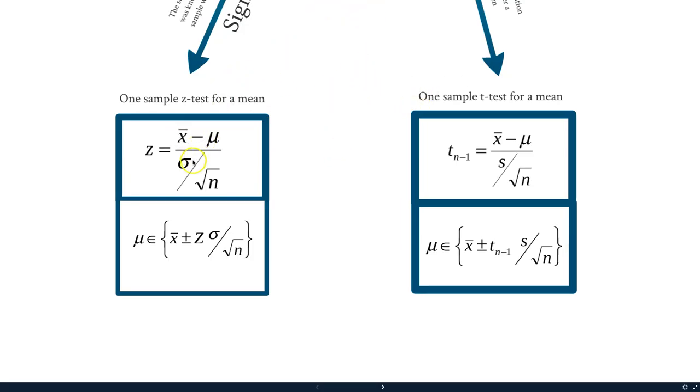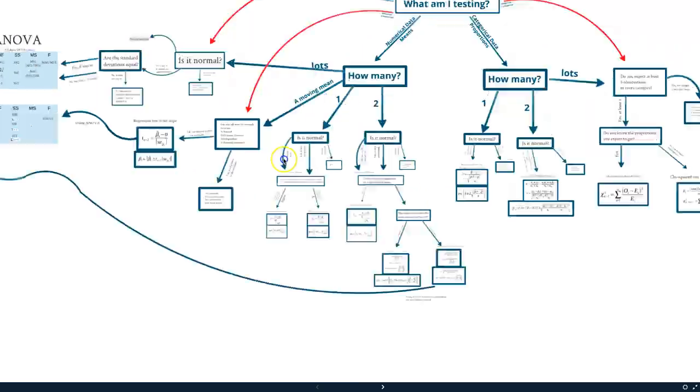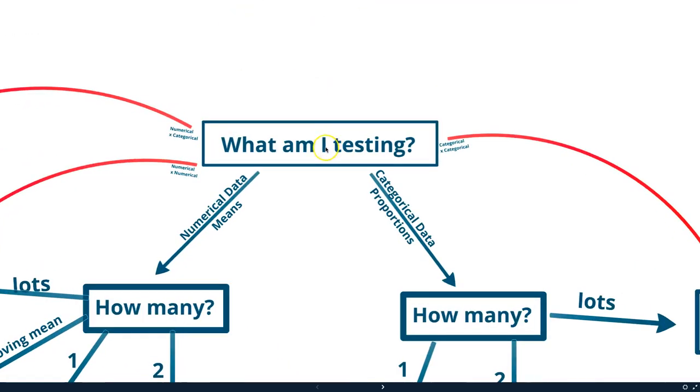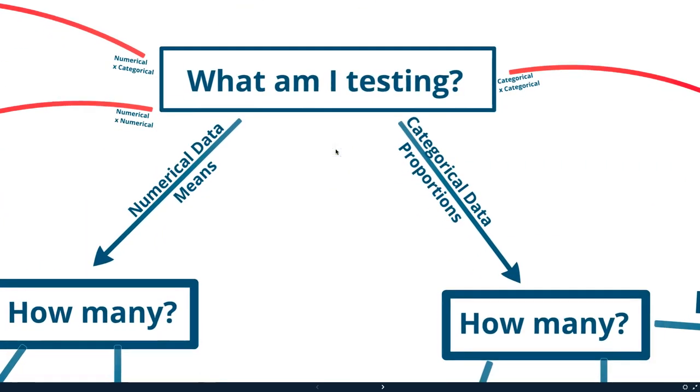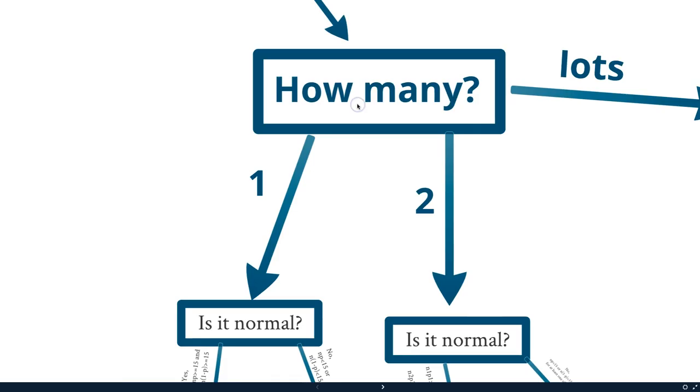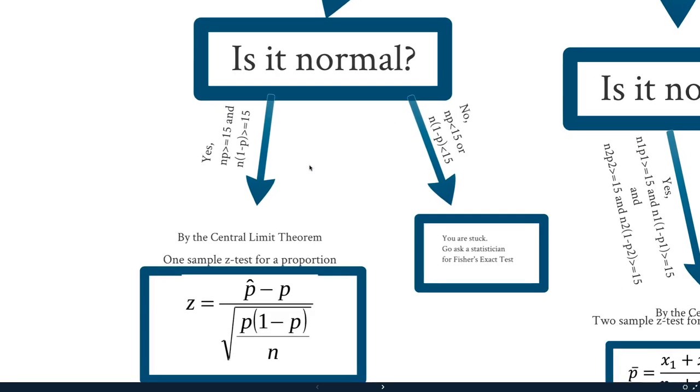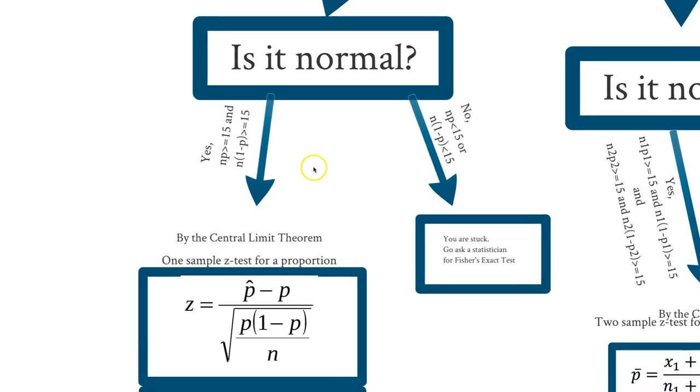Let's back out and start at the top again. Let's say what am I testing? Let's say we're dealing with proportions or we're dealing with categorical data. So we'll go down. How many? Right now we're still only just dealing with one, so we're going to go down to this question of is it normal?